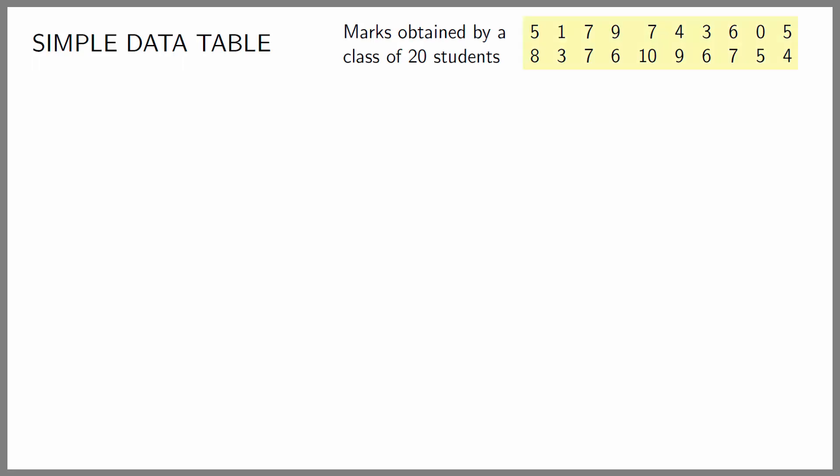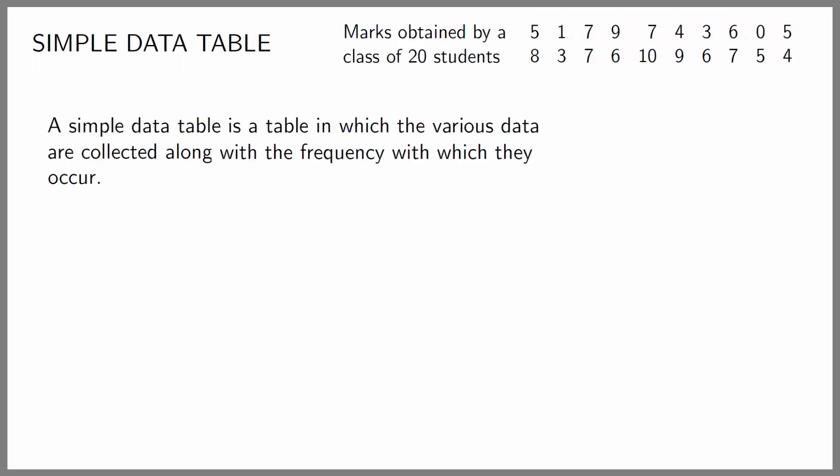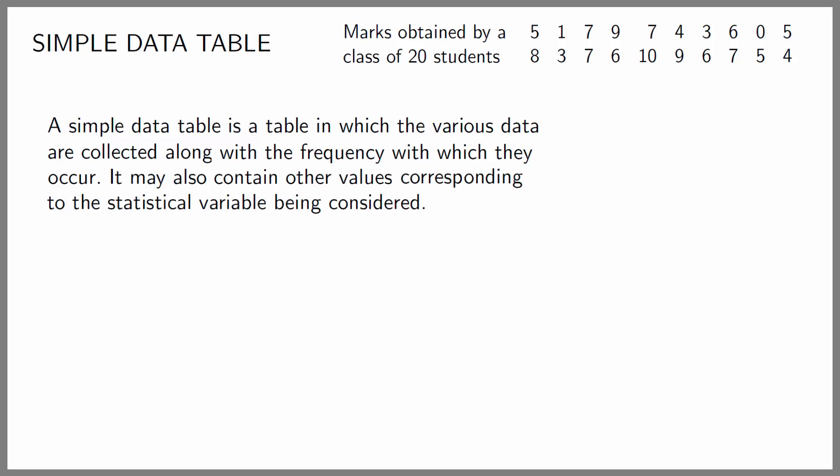On the screen you can see what the students' marks were. A simple data table is one in which the various data are collected along with the frequency with which they occur, and possibly other values corresponding to the statistical variable being considered.